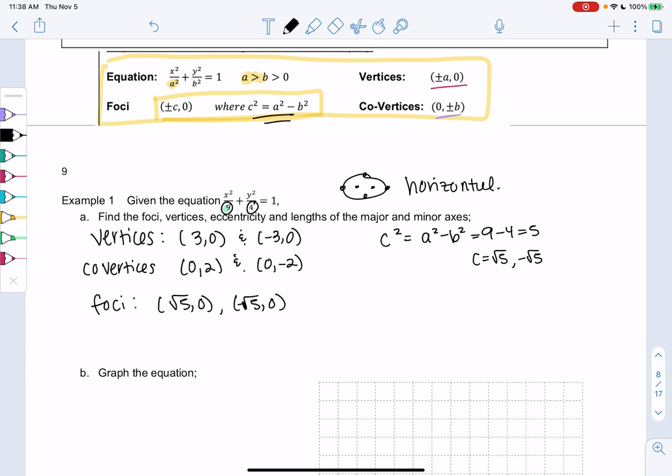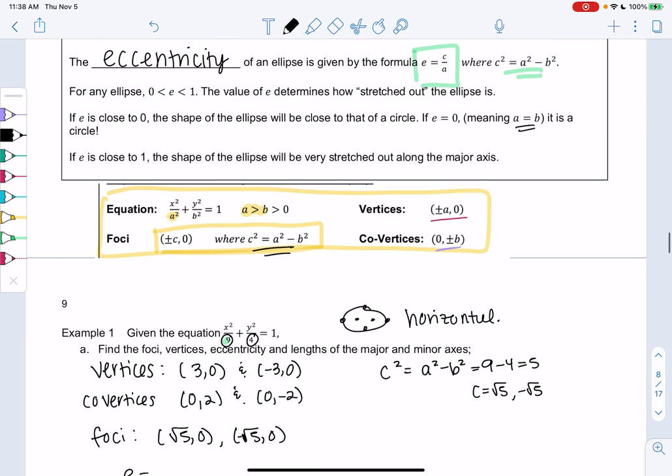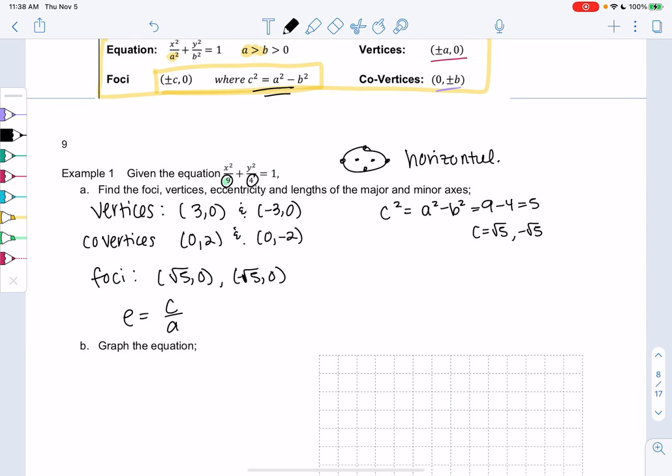Eccentricity is just a nice property. It gives us an idea of is it closer to a circle or closer to a really stretched out ellipse. So e will be c over a - I get that mixed up. So we'll do square root 5 over a, which is 3. So we might have to approximate this just to get an idea of how close to 1 it is. So square root of 5 over 3 is about 0.75, 0.745. So it's more on the stretched out side because it's closer to 1 than 0.